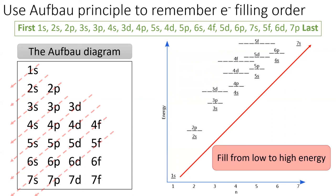We'll stop here since this is enough subshells for all the known elements on the table. We'll see in the next two sections how this filling order gives the periodic table its unique shape.